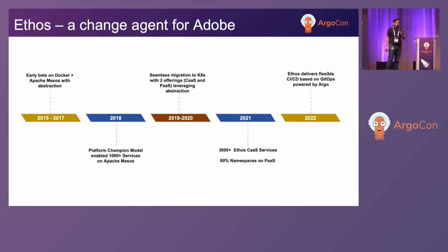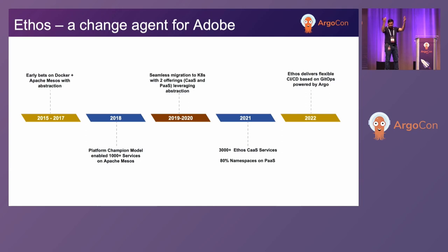The second thing I want to call out is: think about the engineering team going through this transition. They build a lot of software, and after some time they are moving on to the next thing. It takes a lot of guts and energy to not get too attached to what you are building — do it enough and then move on. I want all my Adobe Argonauts to get up. Let's give them a big round of applause — and there are many on the call.